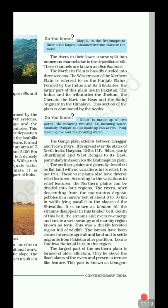A large part of the Punjab Plain lies in Pakistan. The Indus and its tributaries — Jhelum, Chenab, Ravi, Beas, and Sutlej — originate in the Himalayas. The section of the plains is dominated by Doabs. 'Doab' comes from 'do' (two) and 'ab' (water). Similarly, Punjab comes from 'panj' (five) and 'ab' (water).